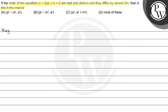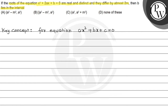Let's look at the key concept. For an equation x² + bx + c = 0, the sum of roots equals −b/a, and the product of roots equals c/a.